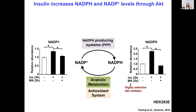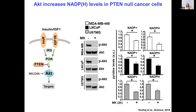Interestingly, the insulin-mediated increase in NADP and NADPH levels was completely inhibited when we pre-treated the cells with an AKT inhibitor, MK2206. Moreover, we used different cancer cell lines that lack PTEN and have constitutively active AKT signaling, and when we treated the cells with AKT inhibitor for about two hours, we observed a decrease in both NADP and NADPH levels, suggesting that AKT signaling affects NADP and NADPH production.